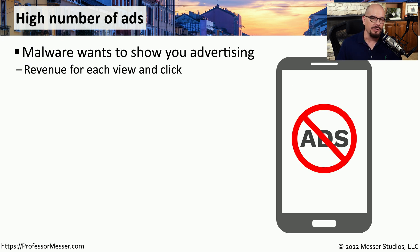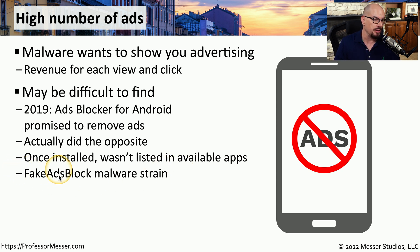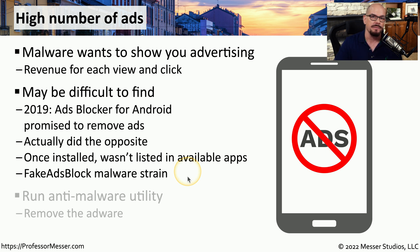One way to tell if you've got malware on your device is that you're seeing a lot of ads show up on your screen. This is an easy way for malware authors to make money by forcing you to watch ads. In 2019, an app called Ads Blocker for Android promised to remove all ads from the device. In reality, this was a Trojan horse — it was designed to provide you with a lot more ads on your screen. Once users installed this app, they were effectively installing the fake Ads Blocker malware and getting more ads shown on their mobile device. Your only choice at that point is to find some anti-malware that can remove the malware and clear all of those ads.